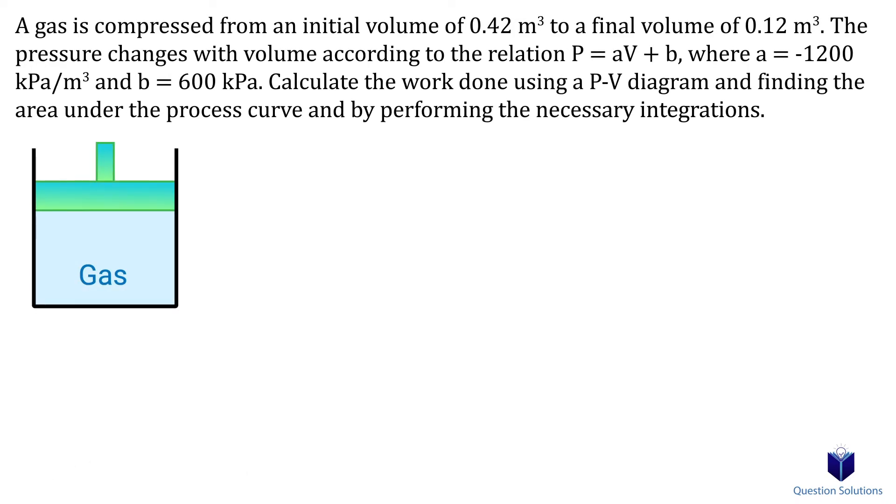Let's take a look at this question, where we compress a gas. We need to figure out the work done during this compression process by plotting a pressure volume diagram and by integrating. Let's write down what we know. The initial volume is 0.42 cubic meters and the final volume is 0.12 cubic meters. We're also given the equation for the pressure change, so let's write that down as well.